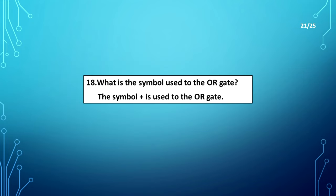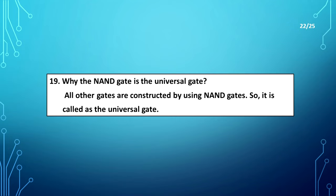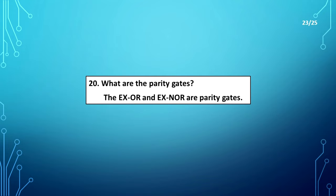What is the symbol used for the OR gate? The symbol plus is used for the OR gate. Why is the NAND gate the universal gate? All other gates are constructed by using NAND gates, so it is called the universal gate. What are the parity gates? The XOR and XNOR are parity gates.